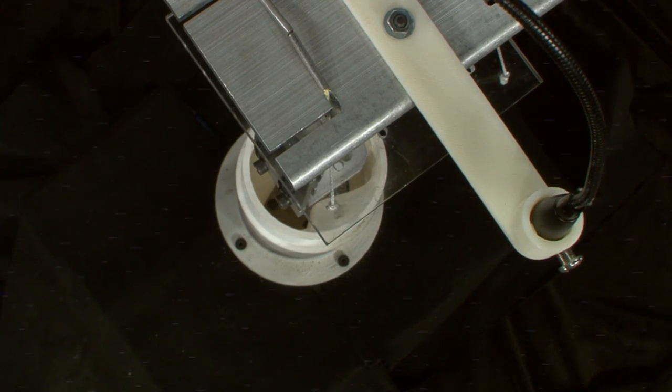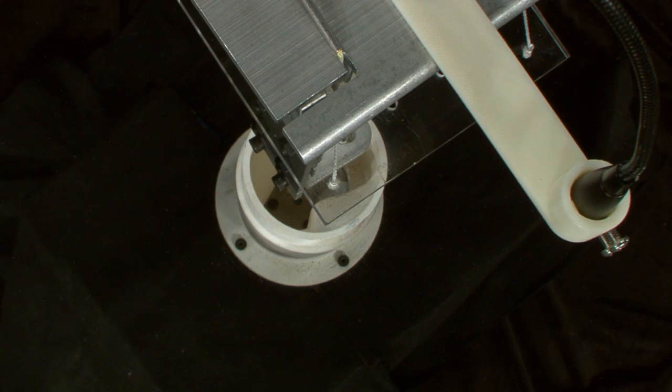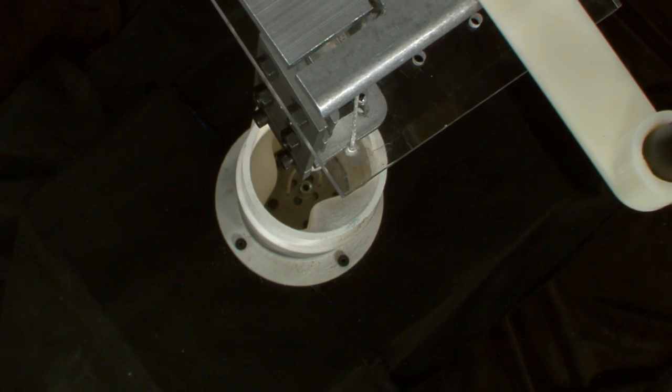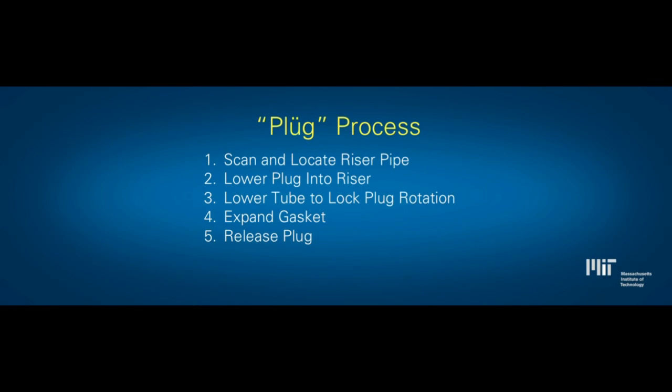This is where LabVIEW really came in handy — we could change parameters, redeploy, and test in just a few seconds. Instead of waiting for code to compile, we could spend our time on algorithm engineering. Once the plug is in the bottom of the riser, a locking tube descends and teeth on the end engage with holes on the top surface of the plug. The plug shaft spins, turning a screw that draws the top and bottom plates together, compressing a ring of surgical tubing between them. This causes the tubing to bulge out against the walls of the pipe and form a tight, pressure-resistant seal. Once sufficiently tight, the locking tube retracts, the shaft spins in reverse, and the plug is disconnected. The robot returns to home position, leaving the plug sealed in place. An additional benefit is that what's left behind is cheap and easy to reproduce — just a simple plug with no electronic components.